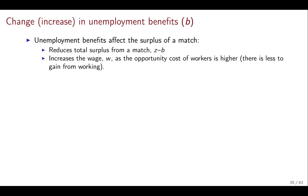The first exercise is a change — in this case an increase — in unemployment benefits or unemployment income. We can work through it in words and then see how graphically all this comes together. Unemployment benefits are going to affect the surplus of a match. The total surplus of the match, Z minus B, is going to be reduced because of the higher benefits. This basically happens because the opportunity cost of workers is higher — they have more income even if there is no match.